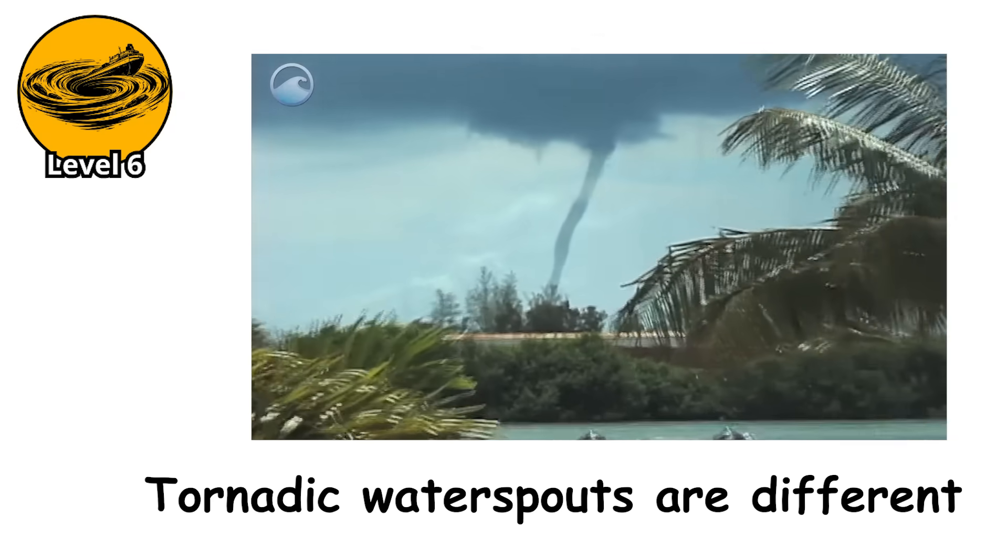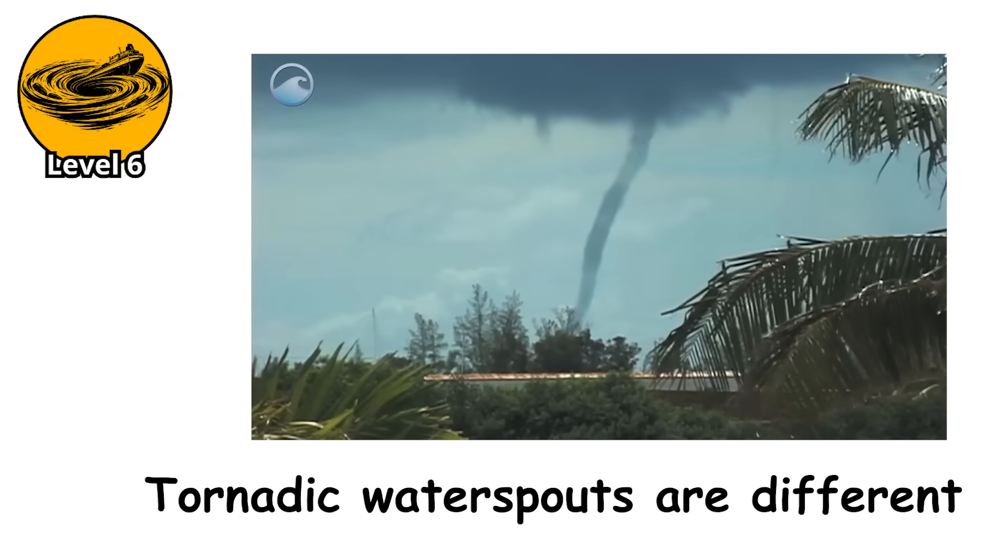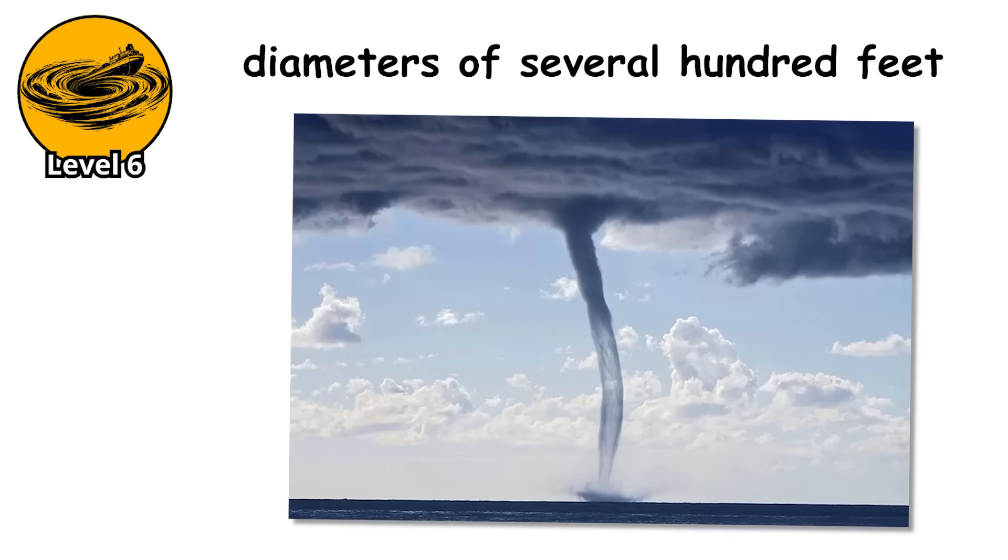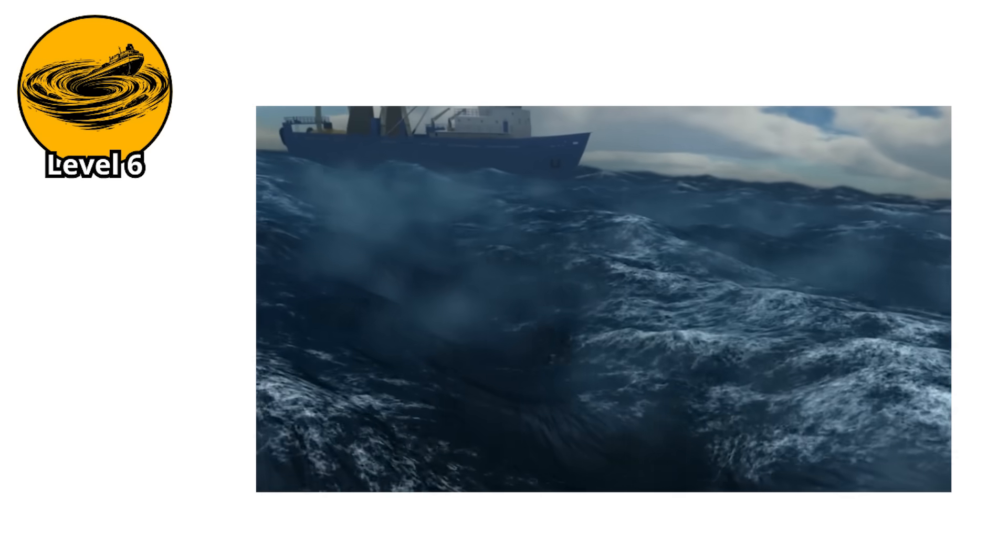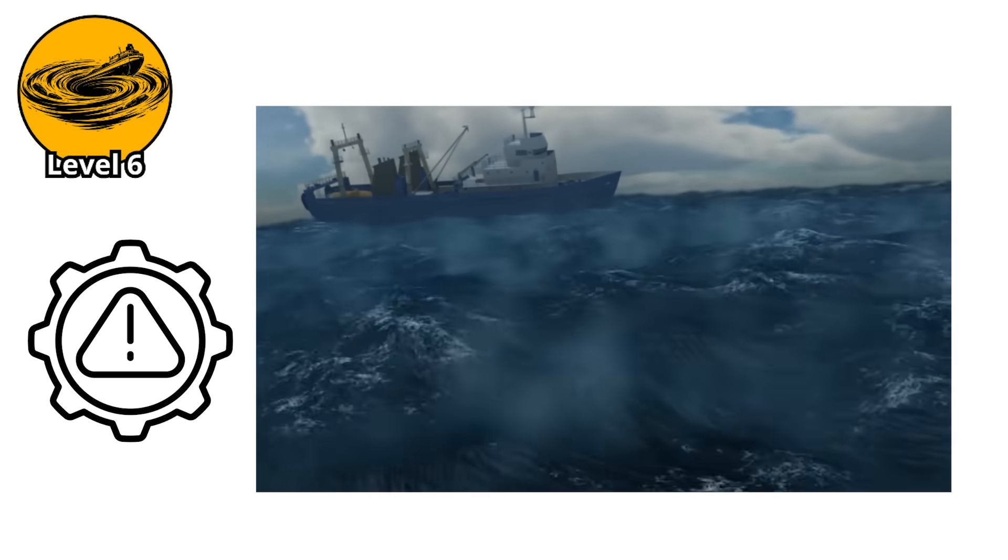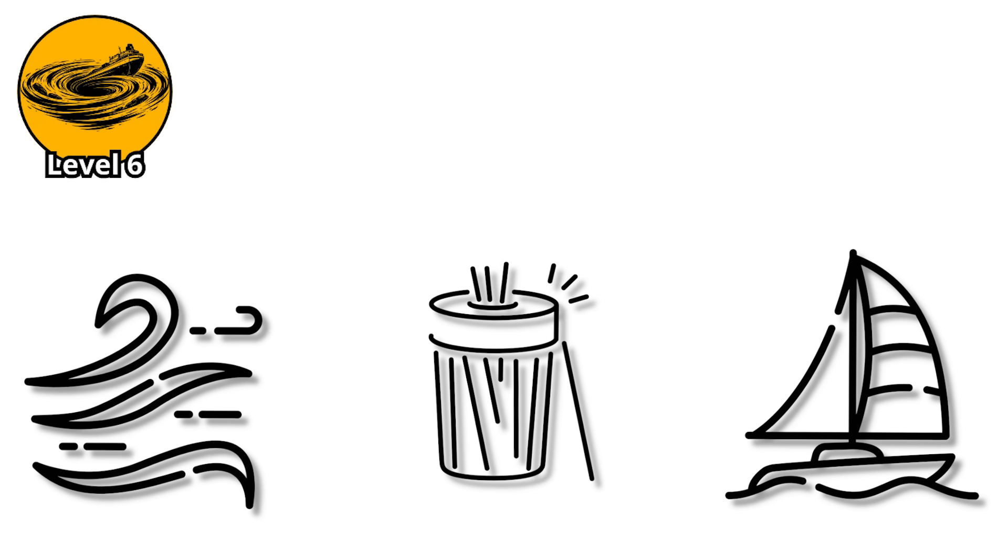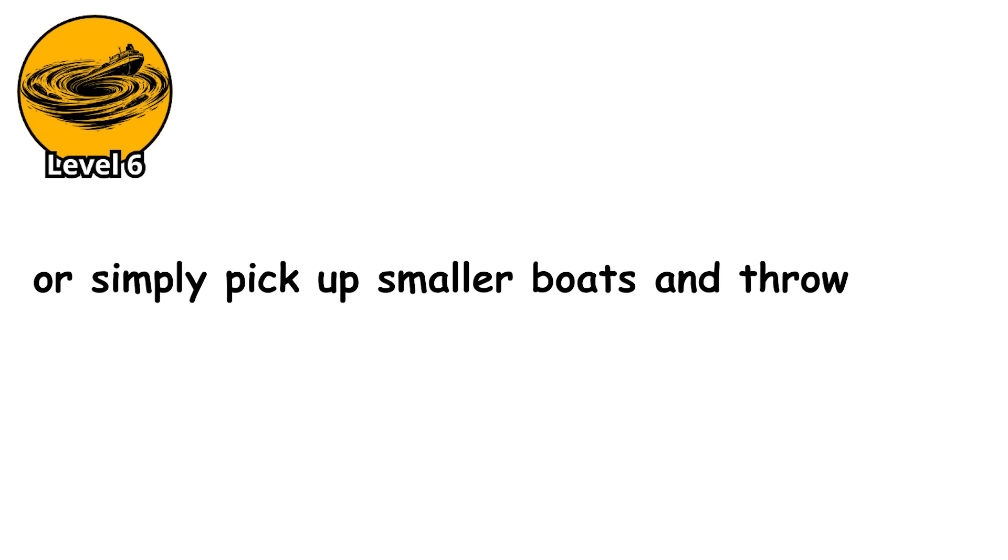Tornadic waterspouts are different. These are actual tornadoes that either form over water or move from land to water. They can have wind speeds exceeding 100 miles per hour, diameters of several hundred feet, and they can last for an hour or more. When a tornadic waterspout passes over a boat, the results are catastrophic. The wind can shred sails, snap masts like toothpicks, flip vessels completely over, or simply pick up smaller boats and throw them.